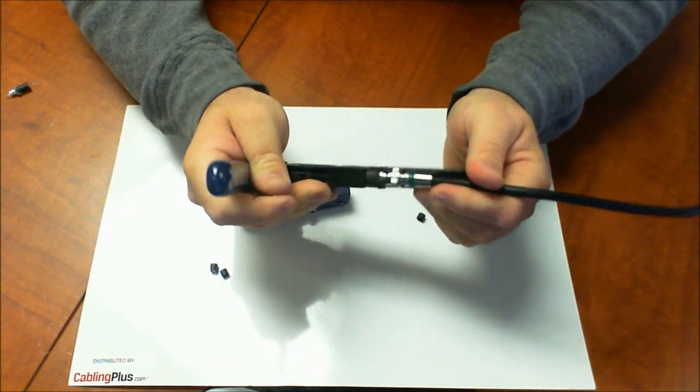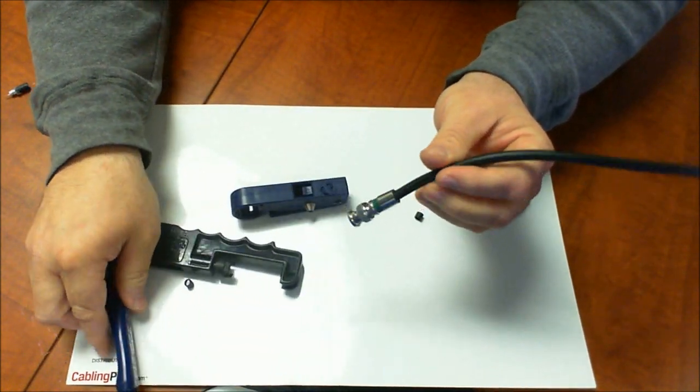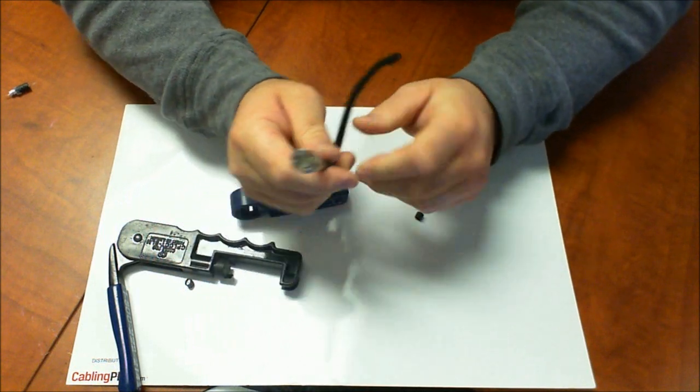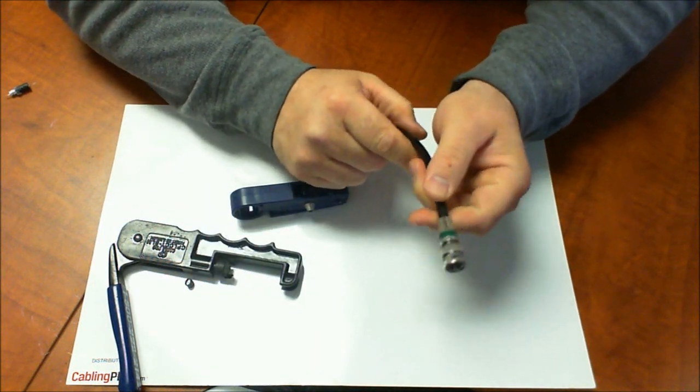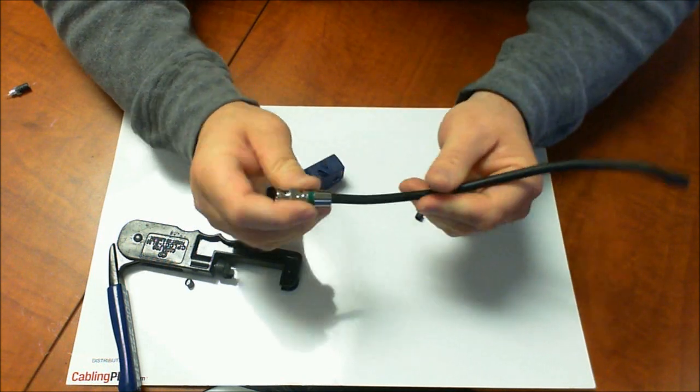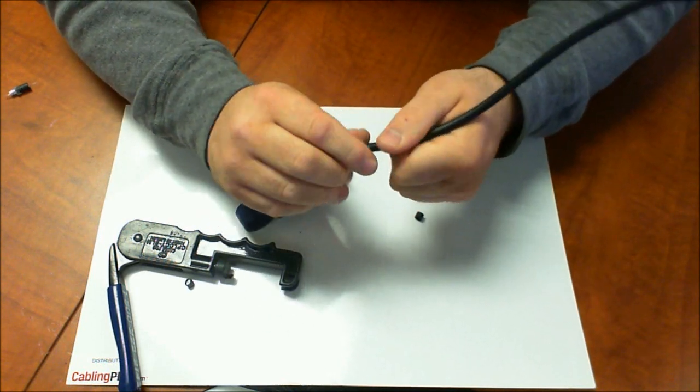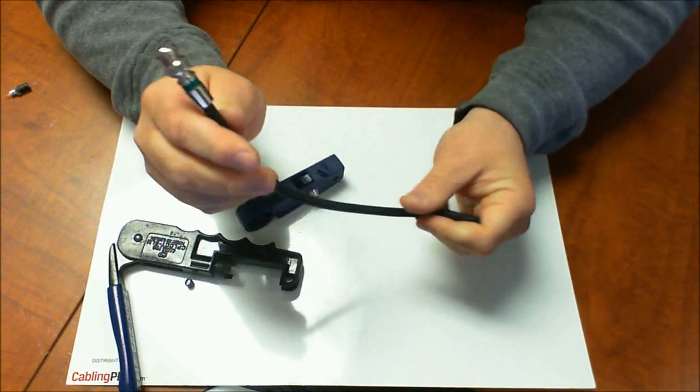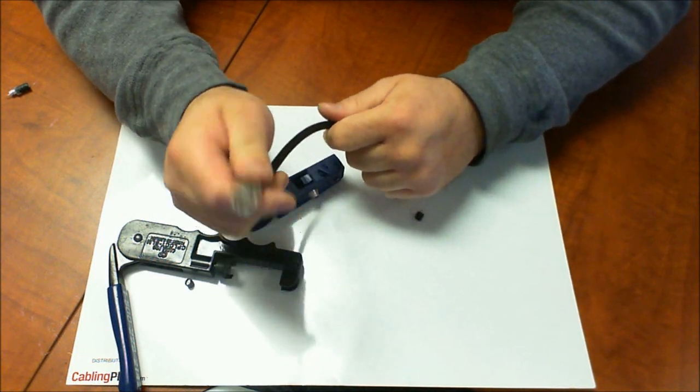Now what this is going to do is give you a 360 degree compression crimp. You're getting about 60 pounds of pull force. It's 360 degrees, so you're not going to get any moisture or dust particles in the termination, and your cables are protected. This should be the last BNC connector you ever install for this installation.